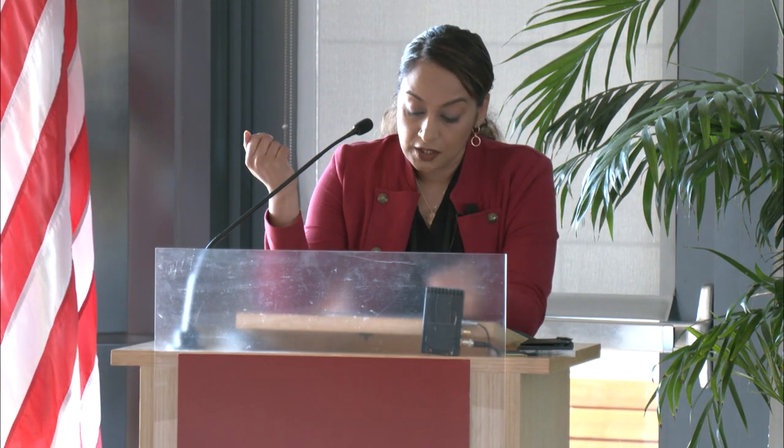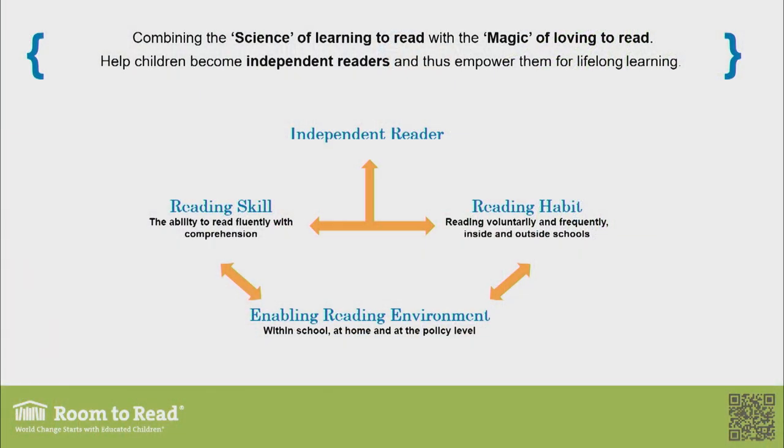As you become more fluent, your ability to make meaning increases. But the opposite is also true — reading with fluency, meaning your speed, accuracy, and appropriate expression, are a function of increased comprehension. That balance is necessary when teaching a child to read, and it's what we're looking to build into the curriculum we're developing.